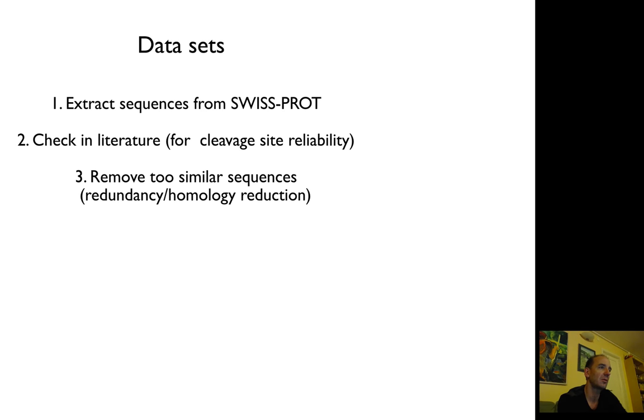The first step when you want to develop a predictor is to extract the dataset. You extract sequences from Swiss-Prot. You use Swiss-Prot because it's manually curated, so the fraction of correctly annotated sequences is higher. If you use UniProt, you will have a problem because most of the data is just based on predictions. So you basically try to make a predictor on other predictions. That's not really reliable.